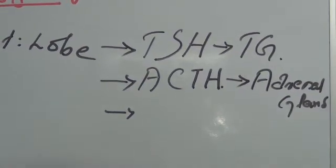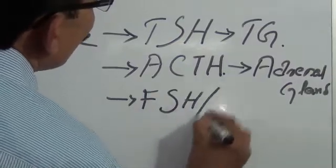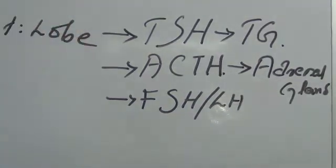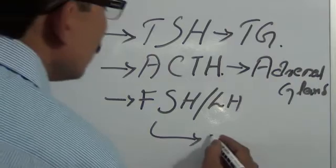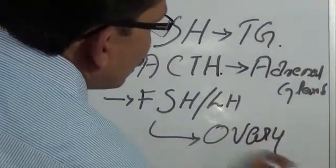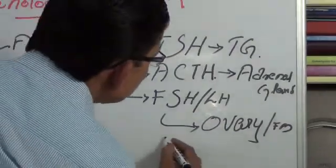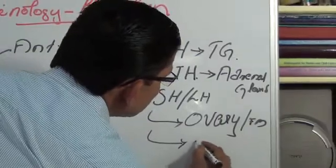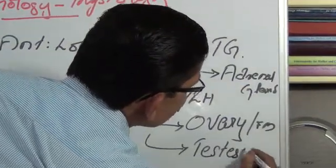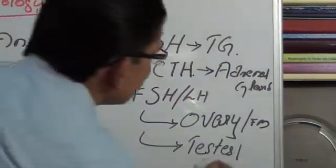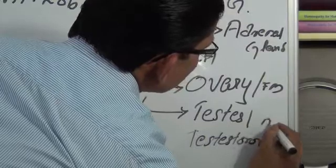Then next is the follicular stimulating hormone or luteinizing hormones. This follicular stimulating hormone and the luteinizing hormones act over the ovary in females especially, and in males it acts on the testis to produce spermatogenesis with the production of testosterone in males.